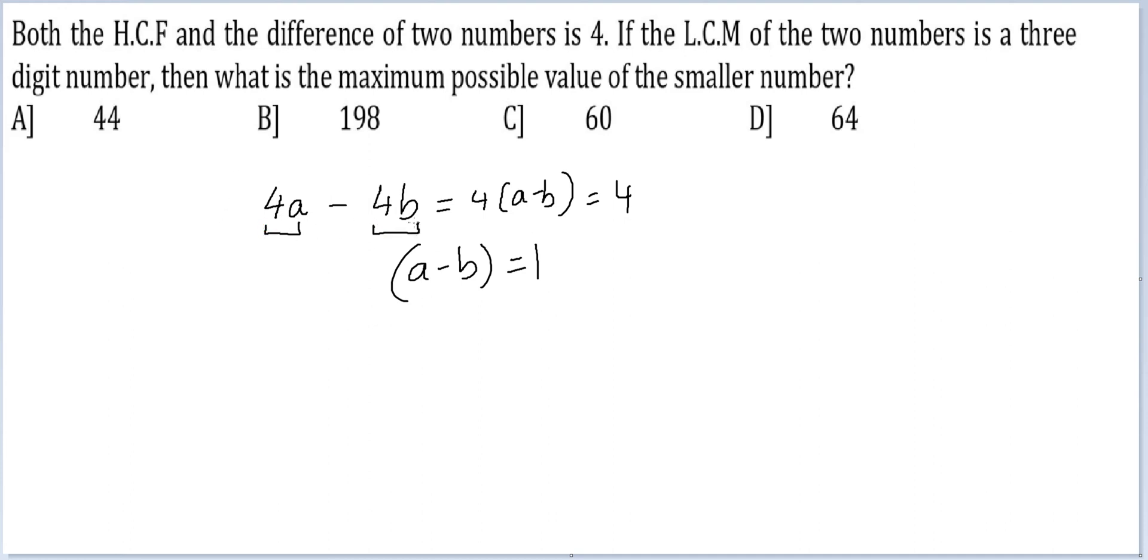The HCF of these two numbers is 4. The LCM will be 4AB and this has to be less than 1000. So AB has to be less than 250.